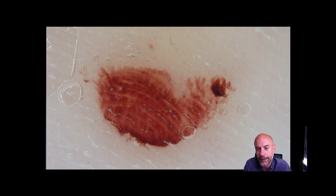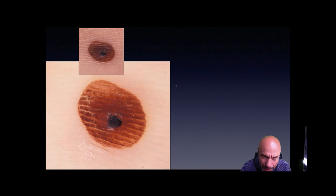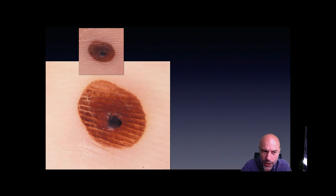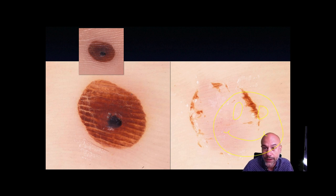Blood is usually easy to recognize — first of all because of the color. Red color means blood. Also peripheral blood spots. Sometimes, especially when the hemorrhage is not so fresh, the color becomes a little more brownish and it might be tricky. Of course the sharply demarcated border is always helpful. And remember that in case of significant doubt, it's quite easy to remove the keratin layer — the blood will disappear together with the keratin layer.